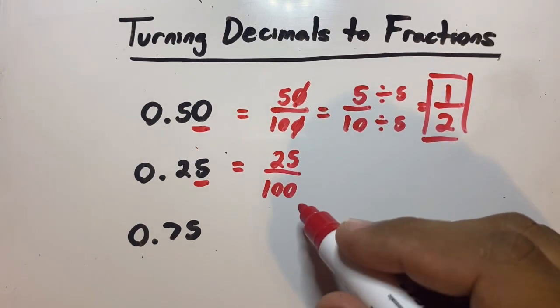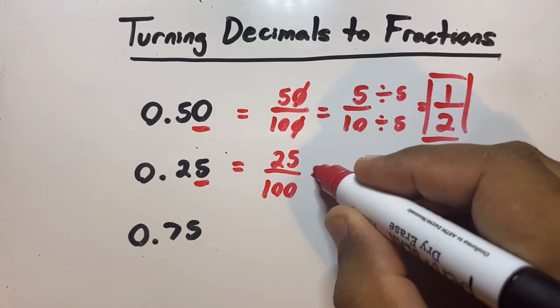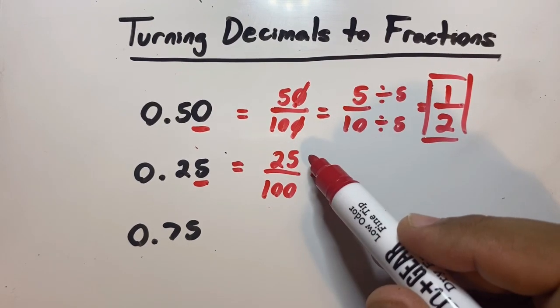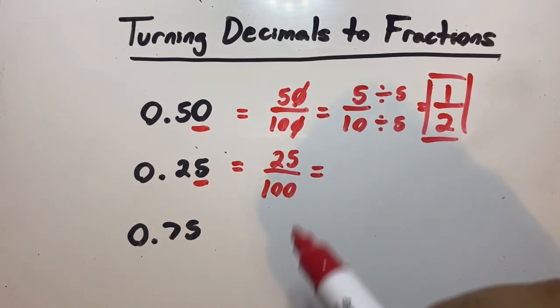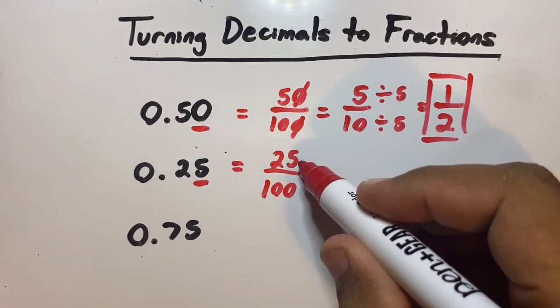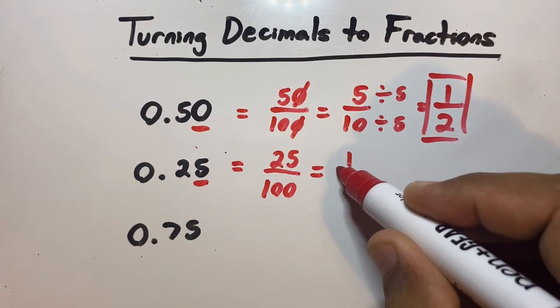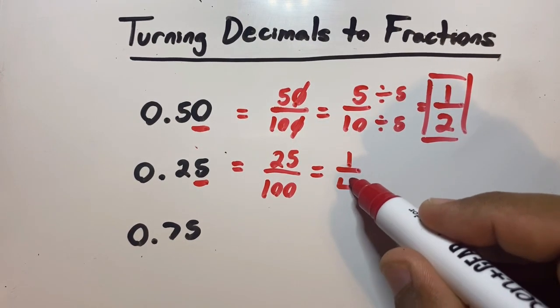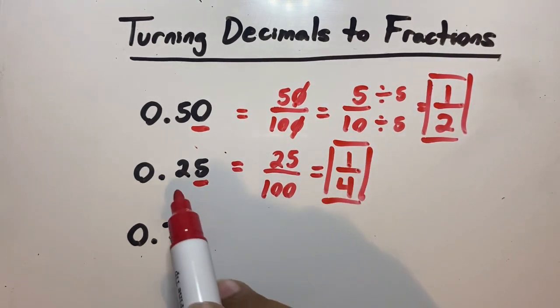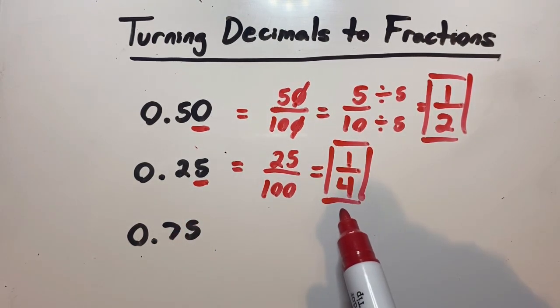We can turn this smaller. We know the number 25 can go inside 25 and the number 25 can go inside 100. If you know your multiplication tables, you know that 25 goes inside 25 one time, and 25 goes inside 100 four times. This is your answer: 0.25 is the same as 1 over 4.